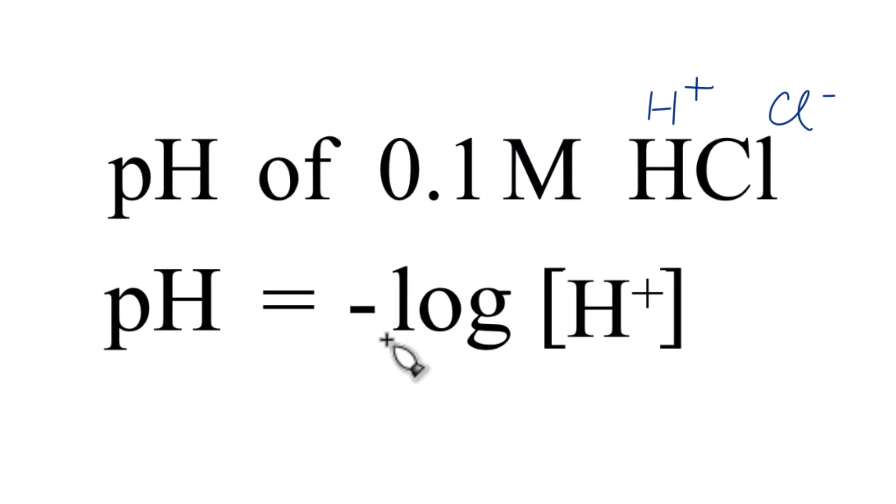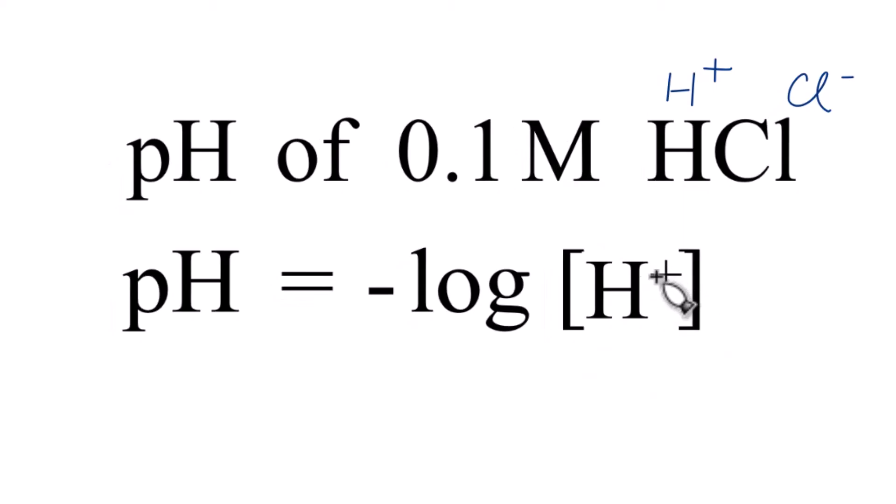pH equals the negative log of the concentration of the H+ ion, the hydrogen ion. So we know that this is 0.1, so we just put that in for the concentration.